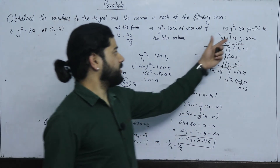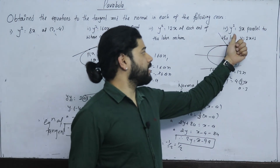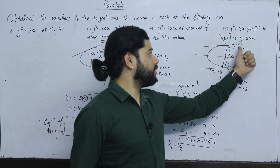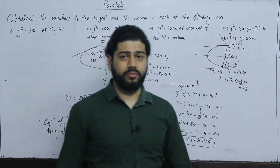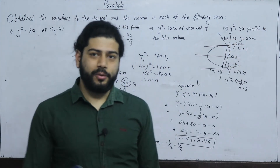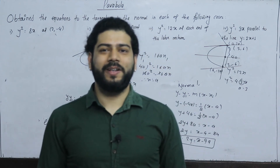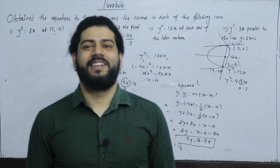The fourth question is y squared equals 3x, parallel to the line y equals 3x plus 1. This question will be solved in the next class. Thank you.